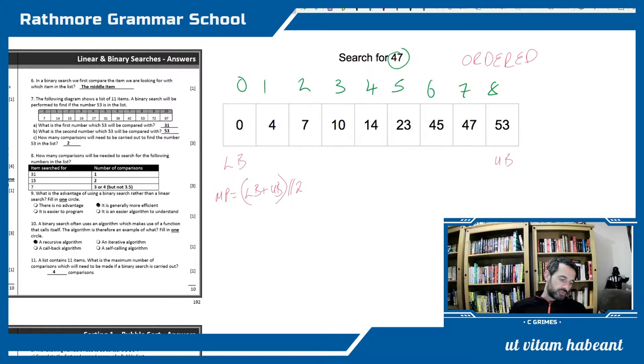So in my first probe, my lower bound in the array is 0, the upper bound is 8, that equals 8, divide that by 2 and I want to look at element 4. So I look into element 4 and I find the value 14. 14 is lower than 47, the value that I'm looking for, so I can do my binary chop and I know that it doesn't exist in that part of the data set.